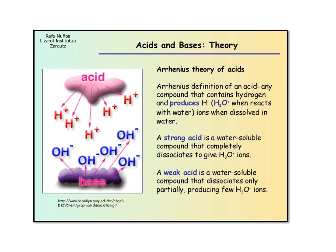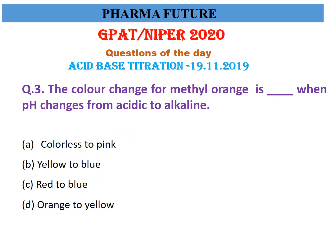For reference, Arrhenius theory defines an acid as any compound that contains hydrogen and produces H⁺ ions — that is called an acid. A strong acid is a water-soluble compound that completely dissociates into H₃O⁺ ions, while a weak acid is a water-soluble compound that only partially dissociates, producing fewer H₃O⁺ ions.